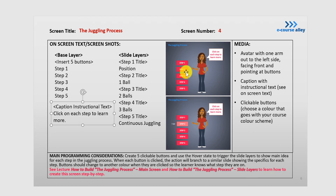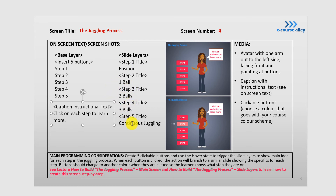As part of the slide layers, which we'll get to in the next video, when the learner hovers over each of these buttons, it'll indicate just the main point about what they'll learn in each step. For example, the first step is position, then we have one ball, two balls, three balls, and continuous juggling. So we're going to create five clickable buttons and use the hover state — button states are what I've used to create the interaction. This will trigger the slide layers to show the main idea for each step.